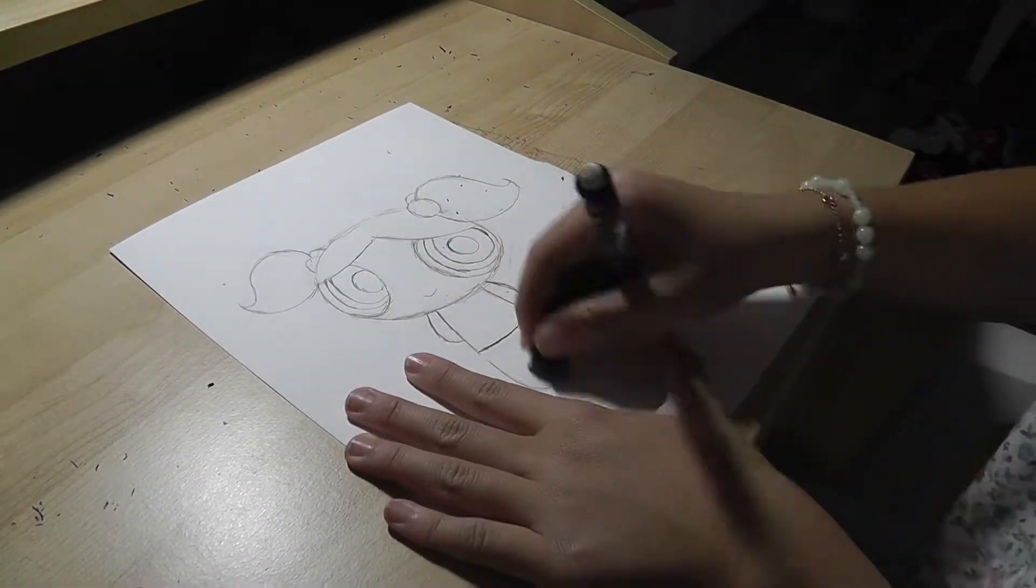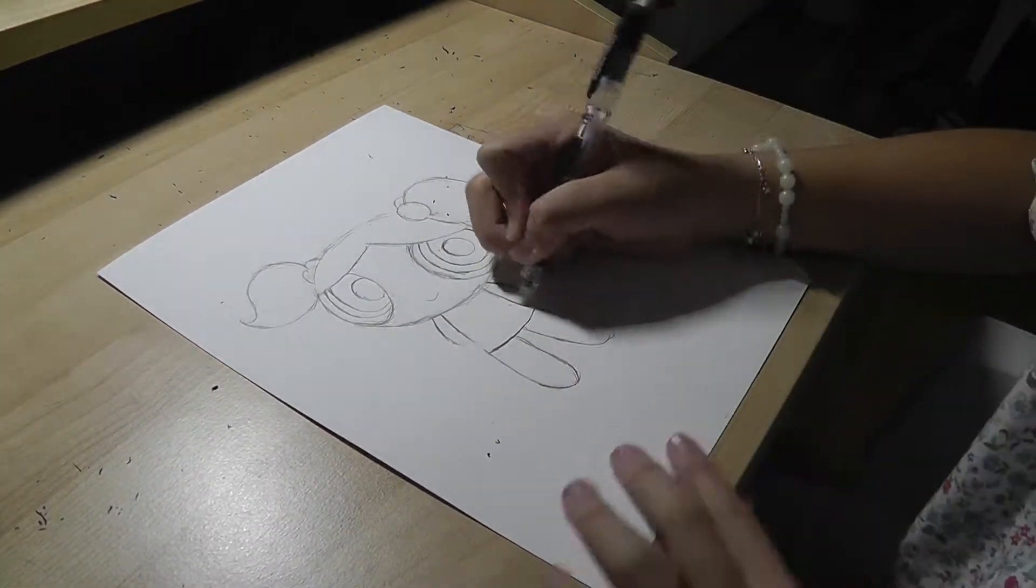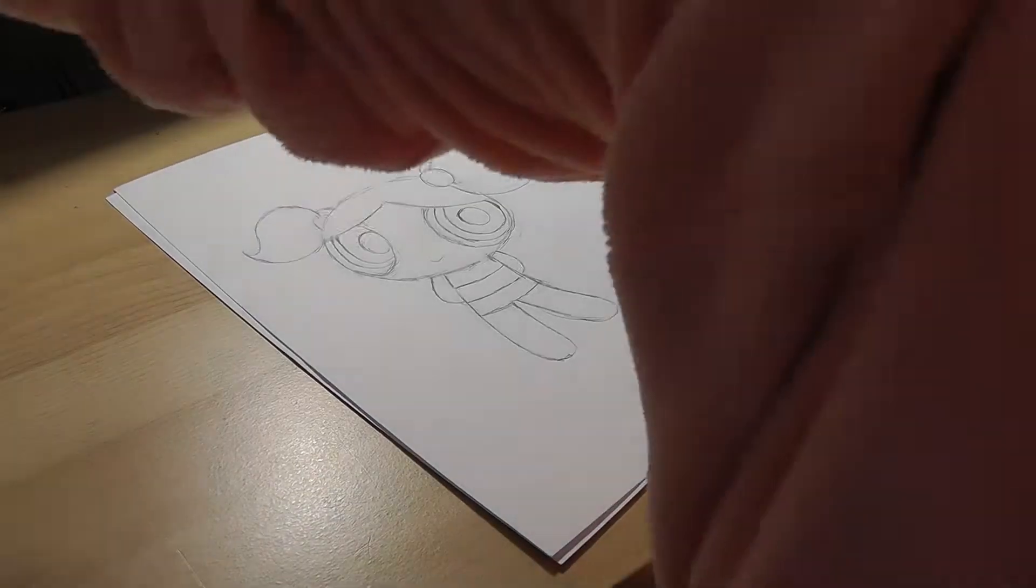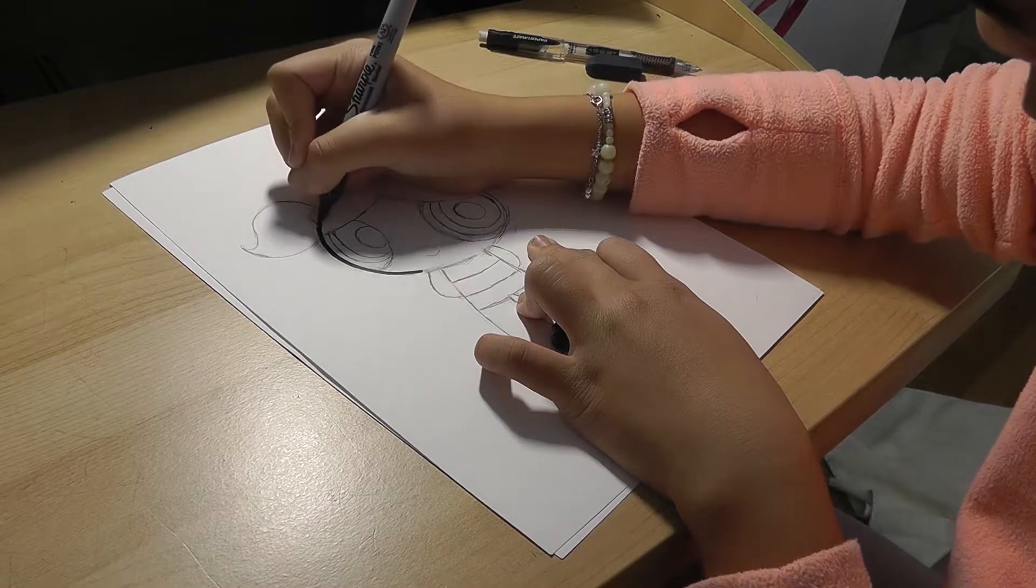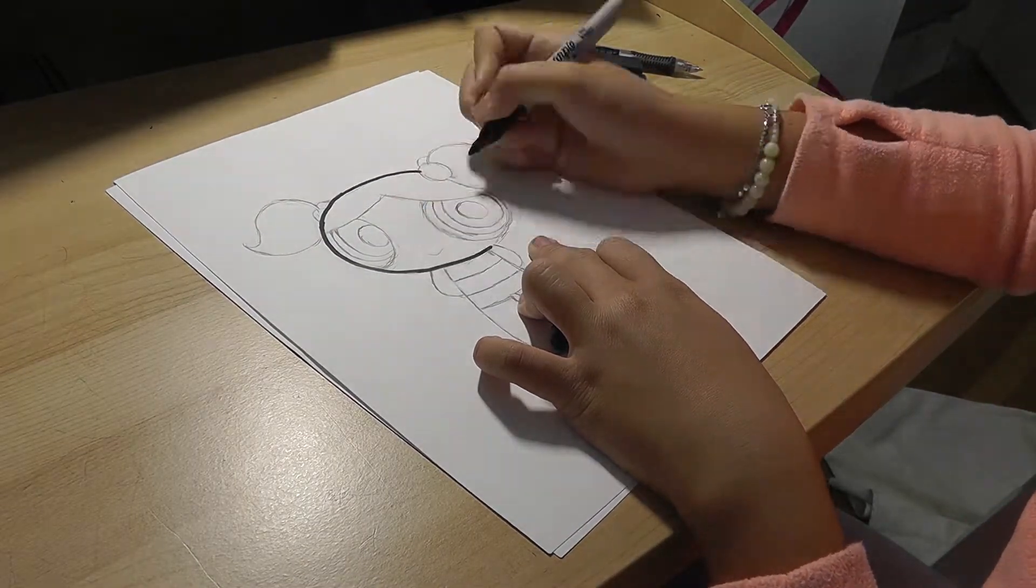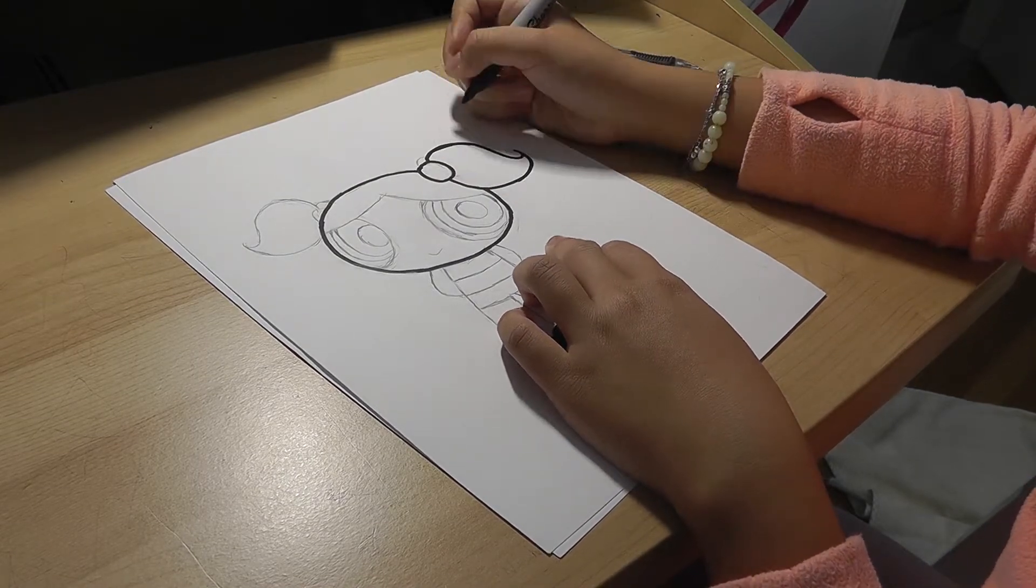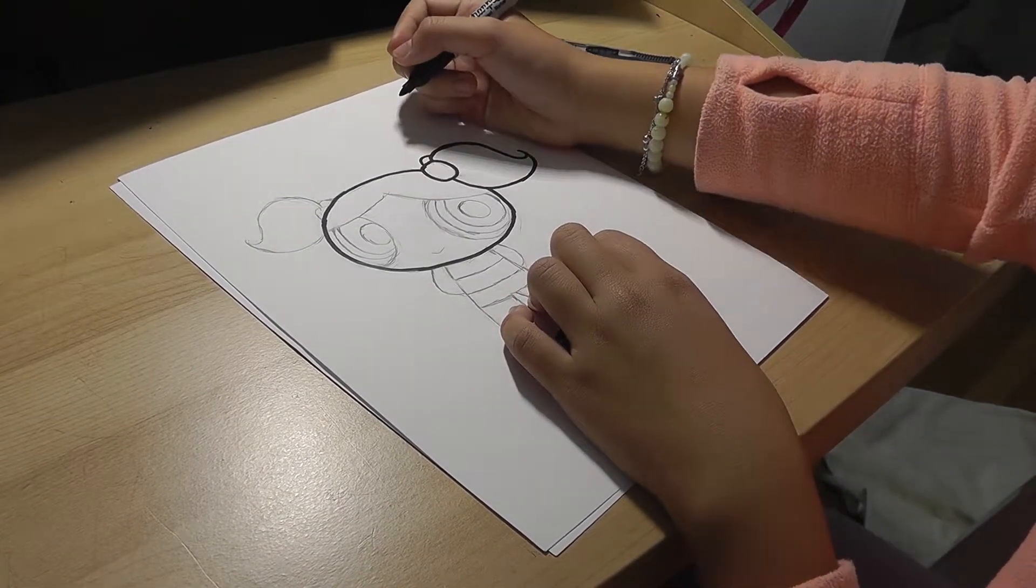Khi các bạn đã vẽ xong rồi, bây giờ mình sẽ đồ lên bằng bút lông cho đẹp. When you're done, use a sharpie marker or any type of marker to go over pencil marks and to make it look nice.